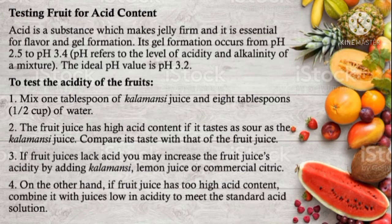Now let's proceed to testing fruit for acid content. Acid is a substance which makes jelly firm, and it is essential for flavor and gel formation. Its gel formation occurs from pH 2.5 to pH 3.4. pH refers to the level of acidity and alkalinity of a mixture, and the ideal pH value is pH 3.2. To test the acidity of the fruits, mix 1 tablespoon of calamansi juice and 8 tablespoons (or half a cup) of water. The fruit juice has high acid content if it tastes as sour as the calamansi juice; compare its taste with that of the fruit juice.